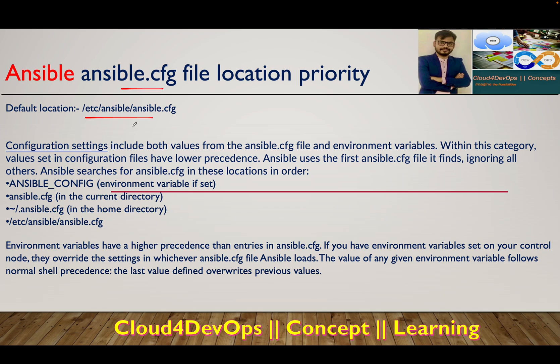For instance, I am working on a database server, my team member is working on an application server, and somebody else is working on a web server — we will create a conflict if we all work from the default location. So it is always advisable to create your own directory and work from there. When you do that and there are multiple locations with ansible.cfg files or an environment variable defined, the question is: which configuration file gets priority?